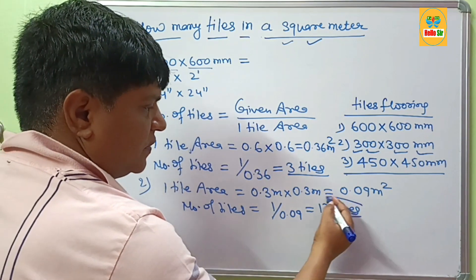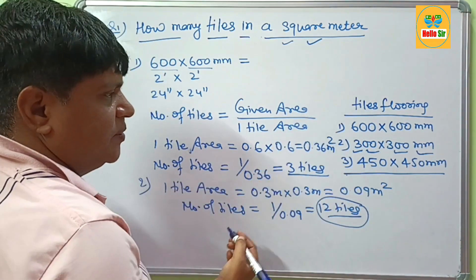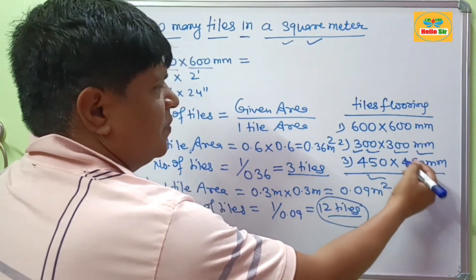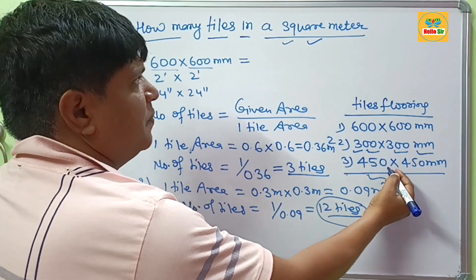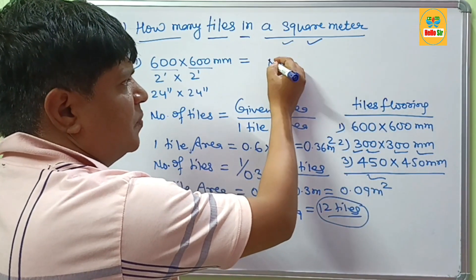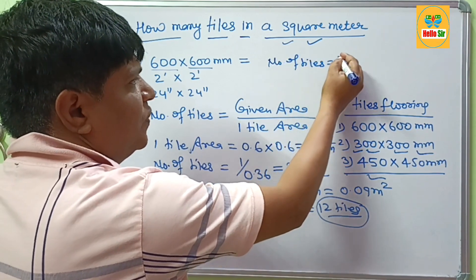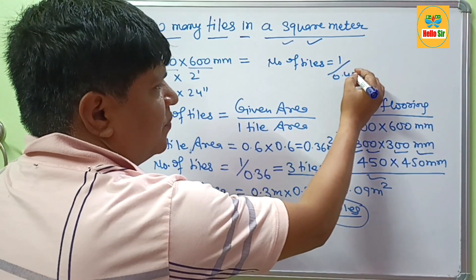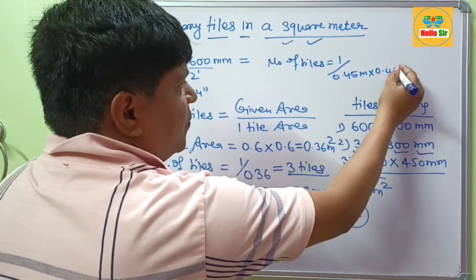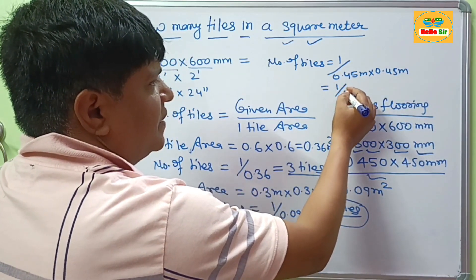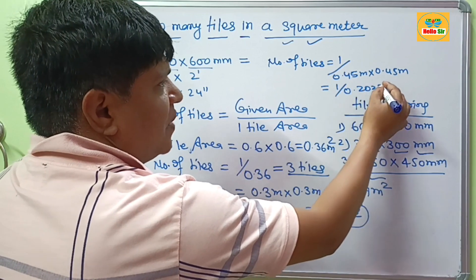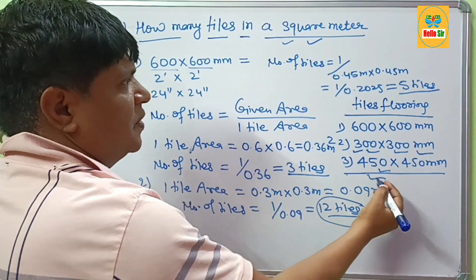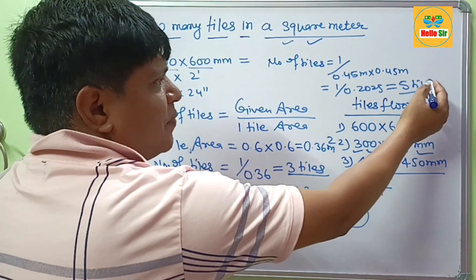If your tile size is 450 x 450 mm and you want to calculate how many tiles are required for one square meter: number of tiles equals 1 divided by the tile area. Multiplying 0.45 m x 0.45 m gives 0.2025 square meters. So 1 divided by 0.2025 gives approximately 5 tiles for 450 mm tiles per square meter.